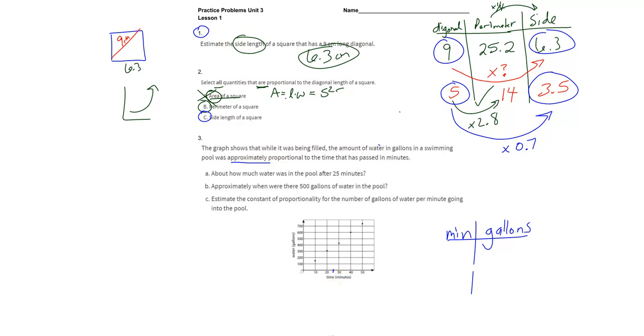Here's 25. Now, if this is approximately proportional, that means that it's probably going to follow a straight line through the origin. And I can see that at 25 minutes,